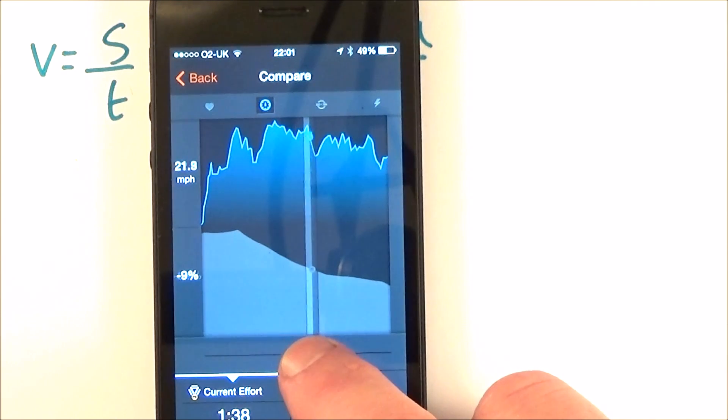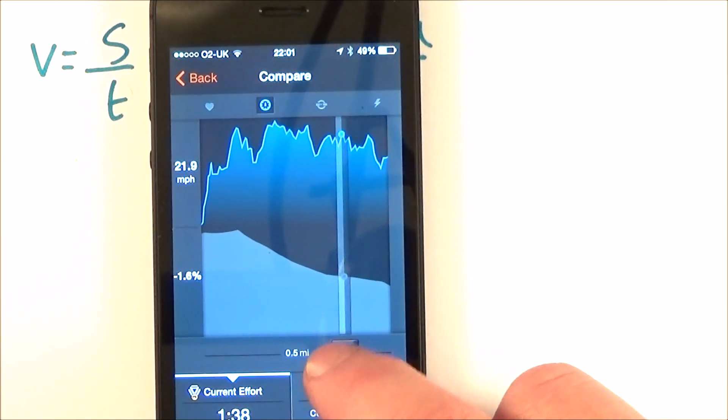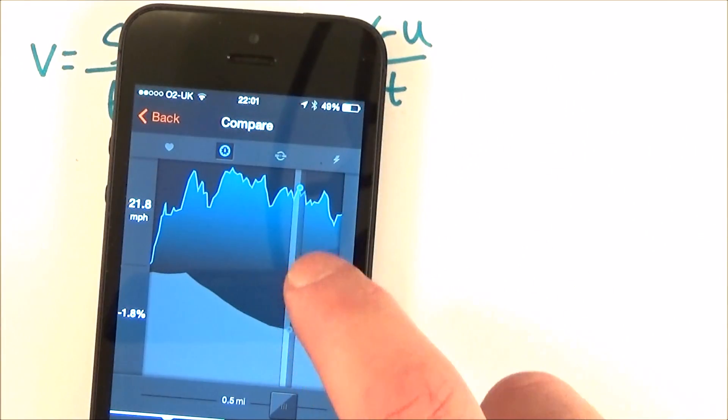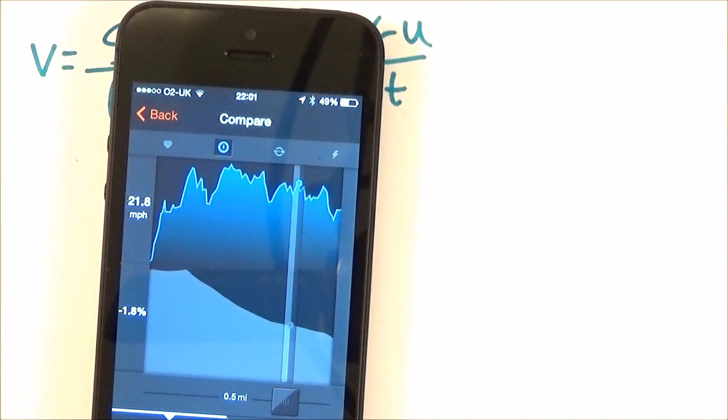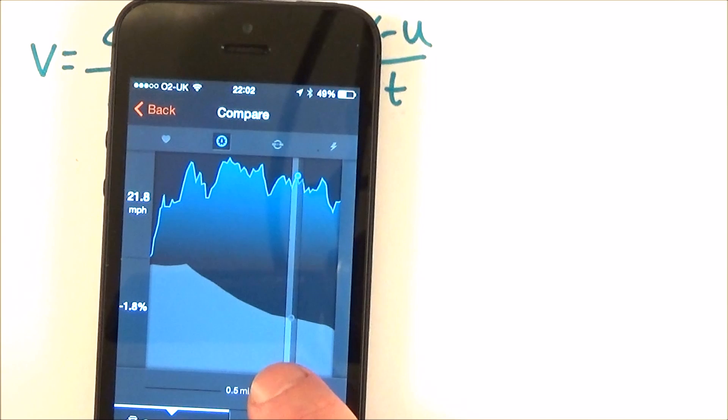And the other graph shows my speed at different times, so I can look at section by section how fast I went, and also I can maybe compare this to other people. What we have here is a great way of visualizing what can be quite a complicated effect, and this here is a brilliant example of a speed-time graph.